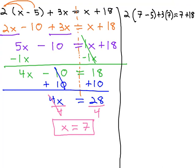Following the order of operations, on the right side we'll do the 7 minus 5 first to get 2 times 2, plus 3 times 7, equals—on the right side we can go ahead and add those together to get 25.